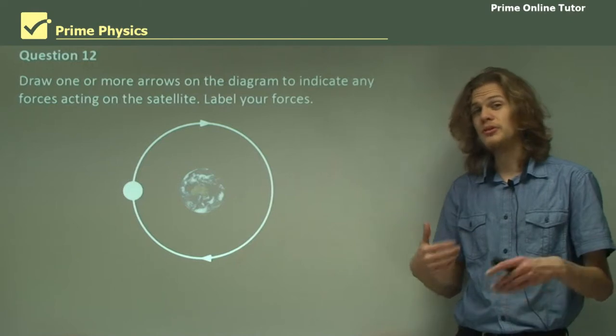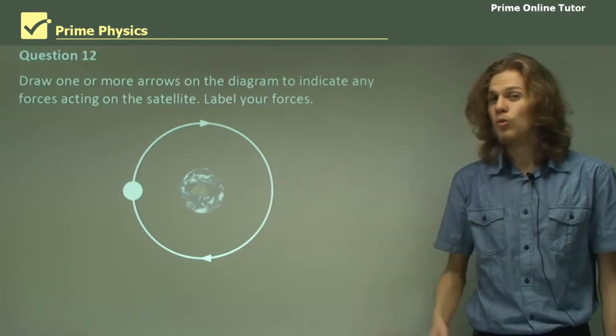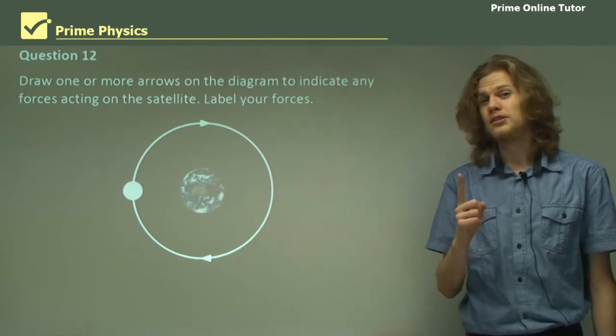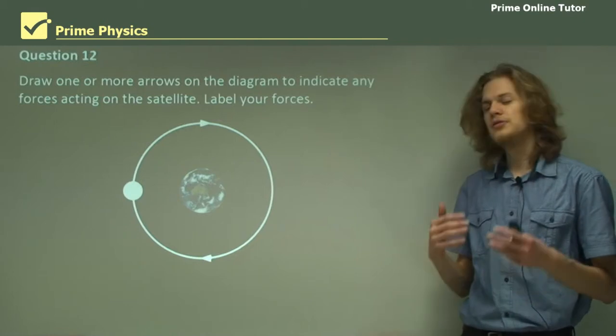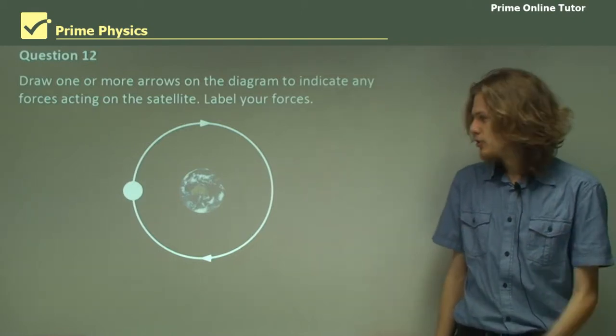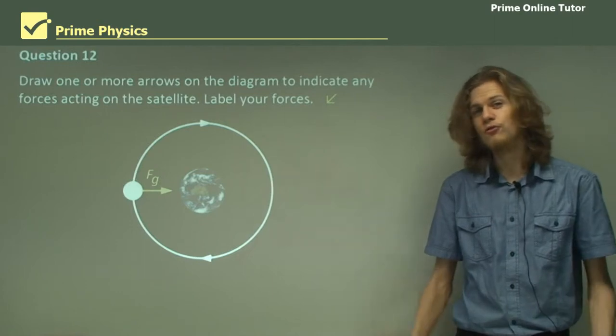This relates a bit to the previous question. What forces are acting on the satellite? Well there's only one. It's gravitational force. And as you would expect, it moves toward the centre of the Earth. So we can draw it on the diagram like so and label it FG for force of gravity.